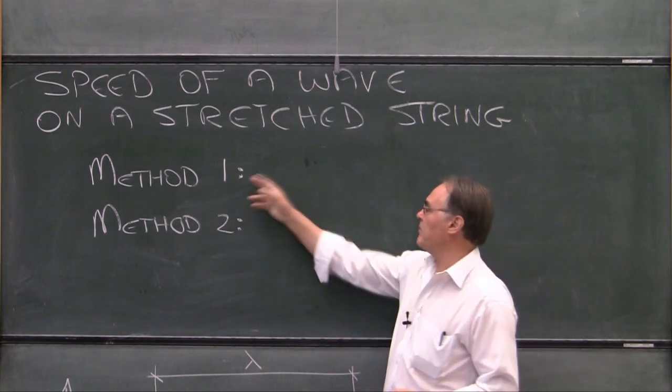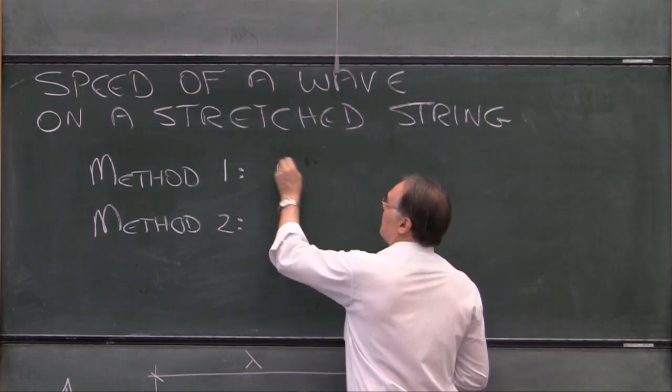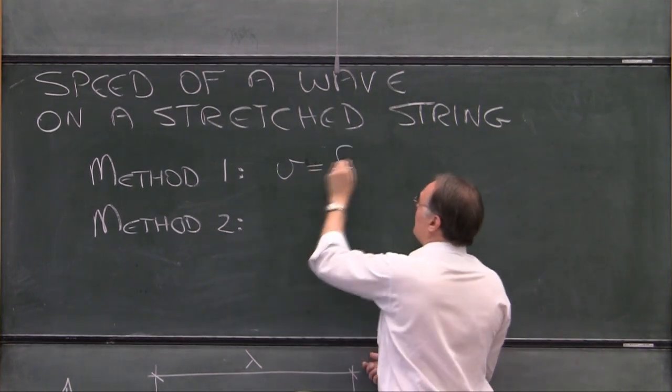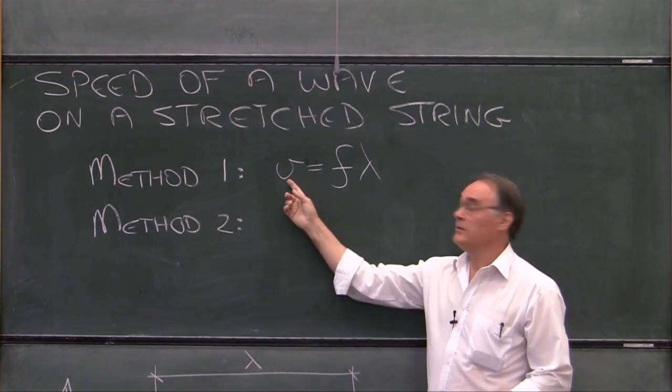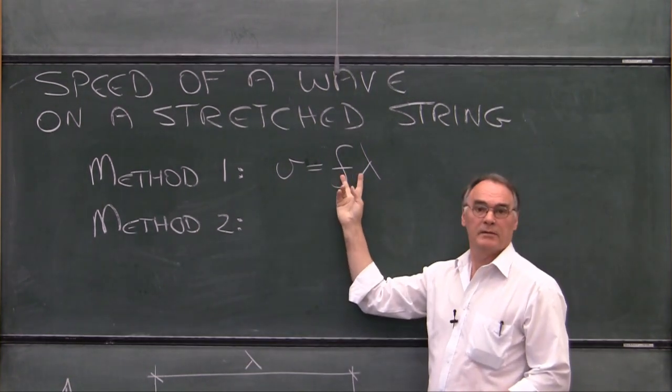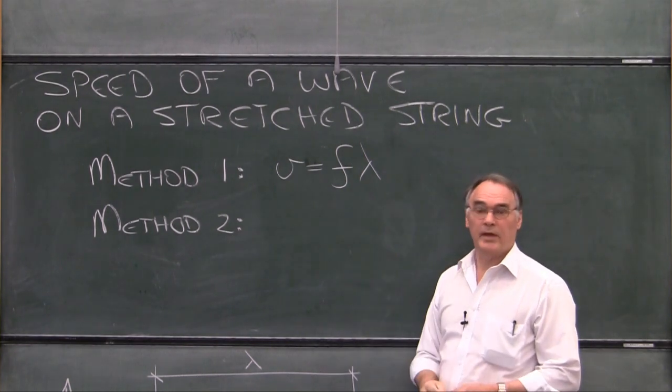We're going to use two methods to determine the speed of the wave on the string. First of all, Method 1, where we're going to use the relationship where the speed is equal to the frequency times the wavelength of the wave on the string.